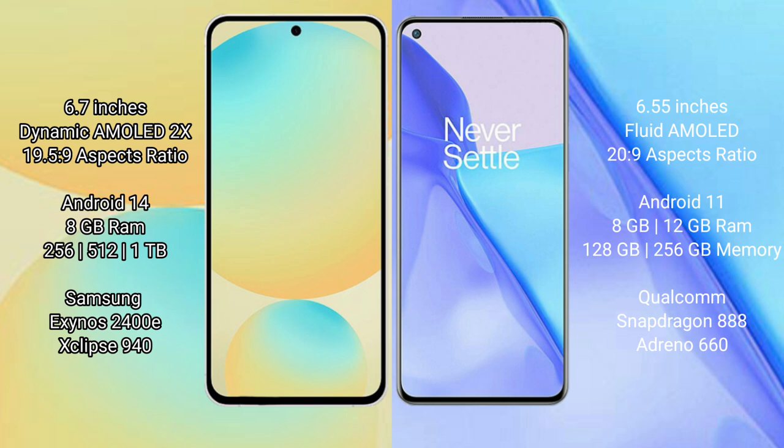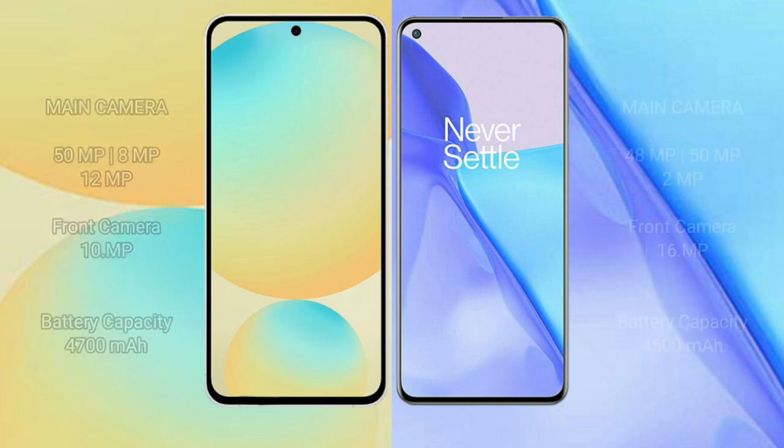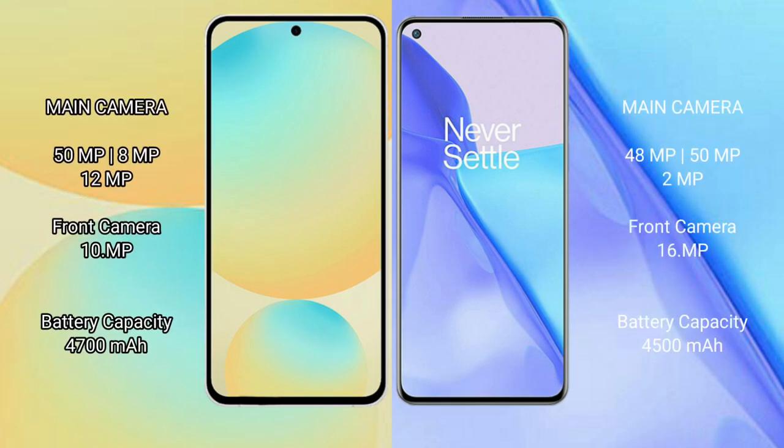OnePlus 9 runs on Android 11. It comes with 8GB and 12GB RAM, and 128GB to 256GB internal storage, with the Snapdragon 888 processor and GPU 660.